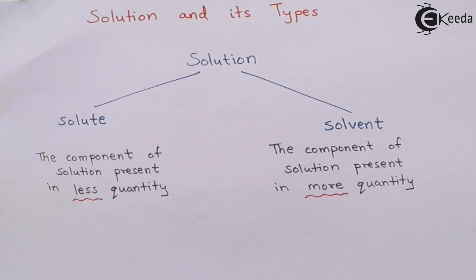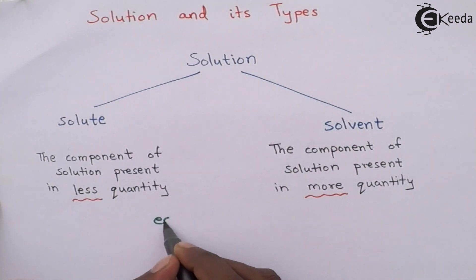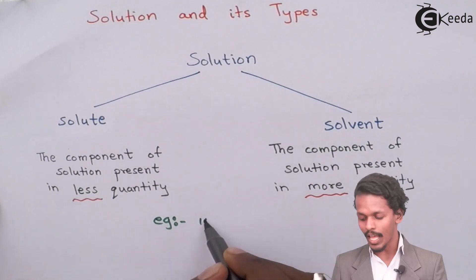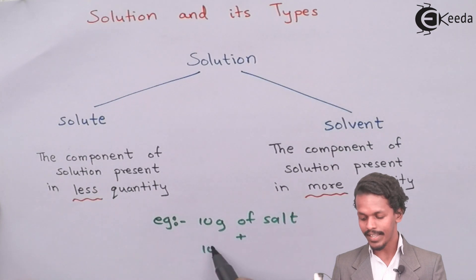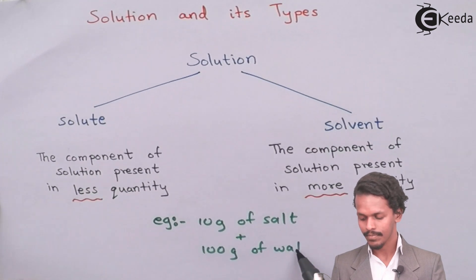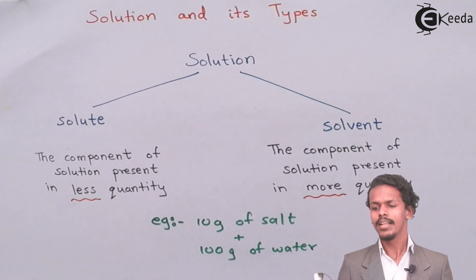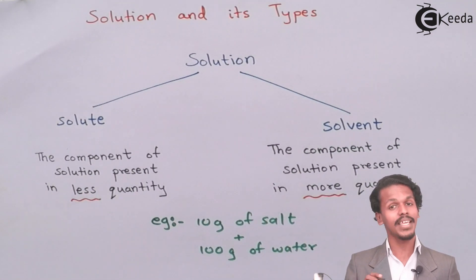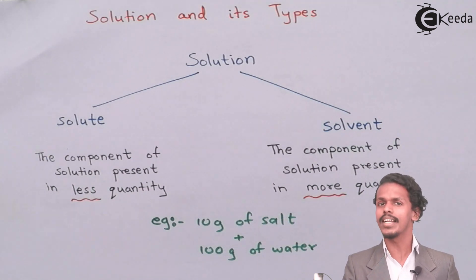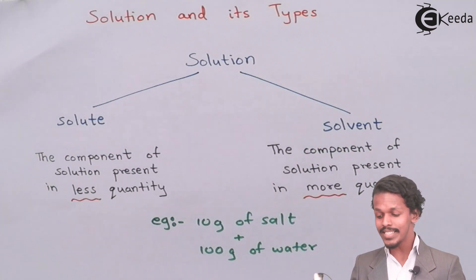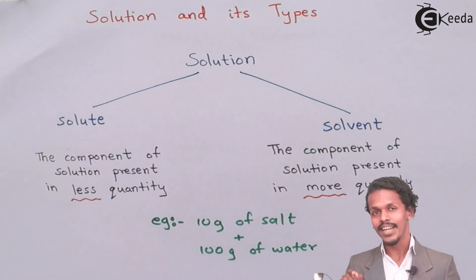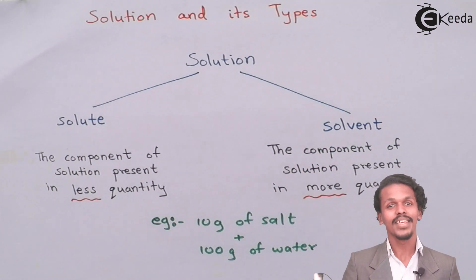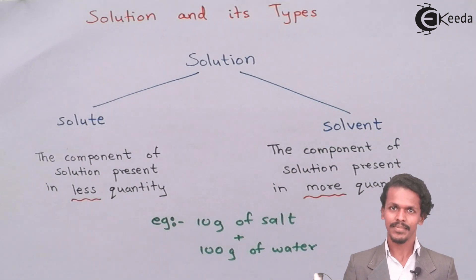Let me give you an example. If I take 10 grams of salt dissolved in 100 grams of water, we need to differentiate what is solute and what is solvent. Since 10 grams is less than 100 grams, the 10 grams of salt is the solute and the 100 grams of water is the solvent.